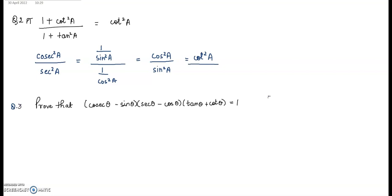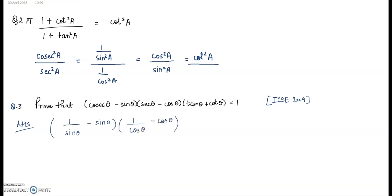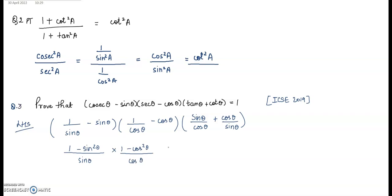The next question is a board question. We solve the LHS: (cosecθ − sinθ)(secθ − cosθ)(tanθ + cotθ). I will write cosecθ as 1/sinθ and secθ as 1/cosθ, and tanθ as sinθ/cosθ. Taking LCM gives (1 − sin²θ)/sinθ multiplied by (1 − cos²θ)/cosθ, multiplied by (sin²θ + cos²θ)/(sinθcosθ).